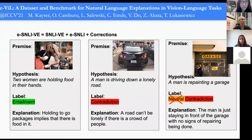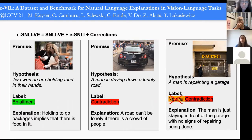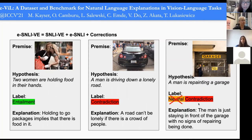We built on SNLI-VE by adding natural language explanations from E-SNLI. We noticed that neutral labels were particularly problematic — the image often contains more information than a textual caption, making seemingly neutral instances actually entailments or contradictions. For example, a person merely standing in front of a garage is most likely a contradiction to 'repairing the garage,' not neutral.